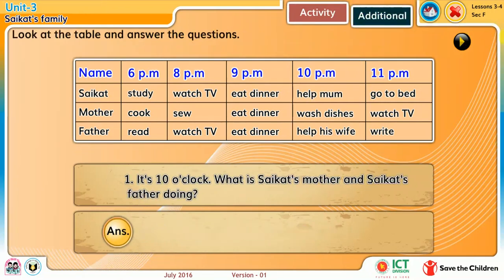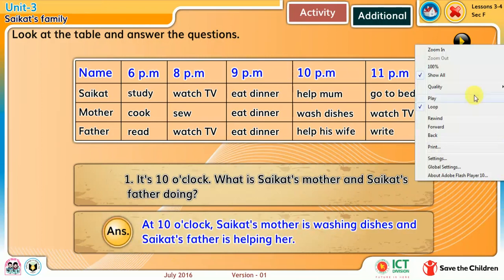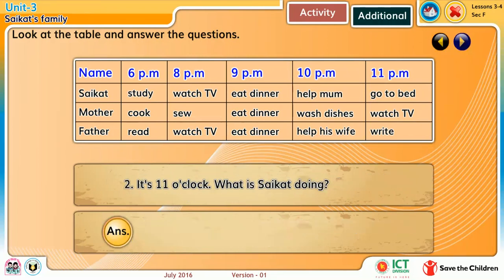Look at the table and answer the questions. It's ten o'clock. What is Shurikot's mother and Shurikot's father doing? At ten o'clock, Shurikot's mother was washing dishes and Shurikot's father were helping her. It's eleven o'clock. What is Shurikot doing? At eleven o'clock, Shurikot is going to bed.